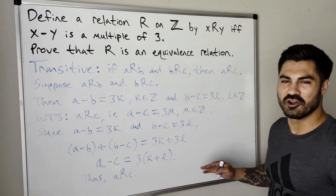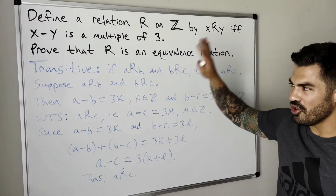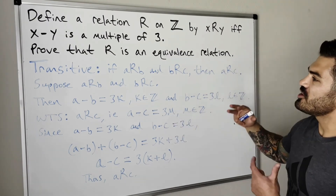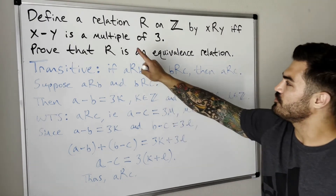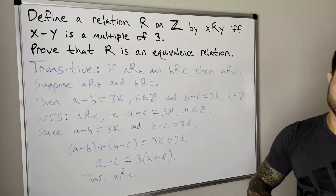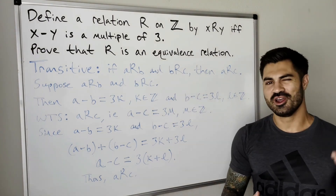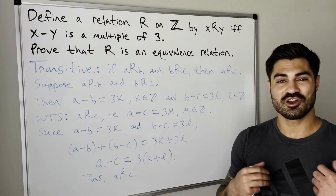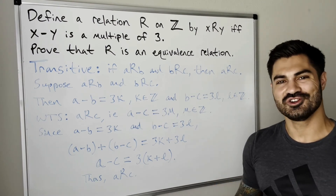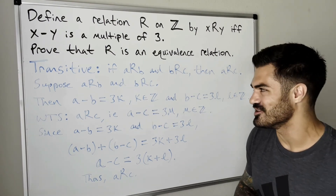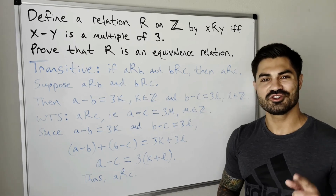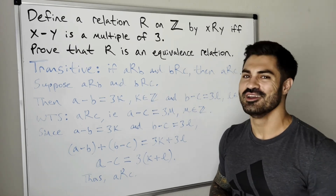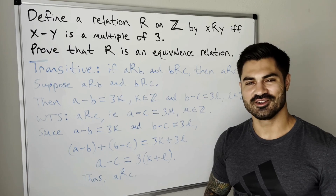Since all three properties — reflexive, symmetric, and transitive — have been proven, R is an equivalence relation. Hopefully that made sense and this helps. We may do one more example, then move on to equivalence classes and functions — injective, surjective, that kind of stuff. Make sure to like, subscribe, and leave a comment below. Keep flexing those brain muscles, and I'll see y'all later.